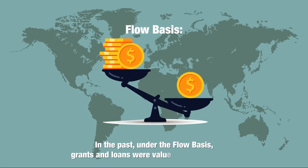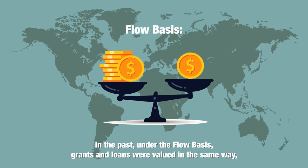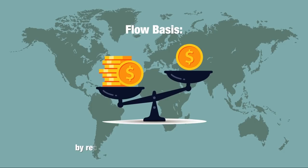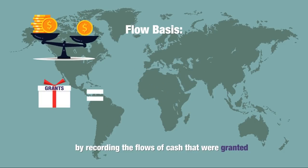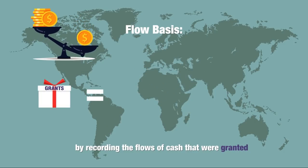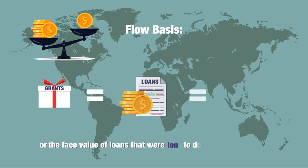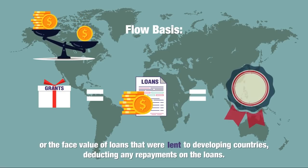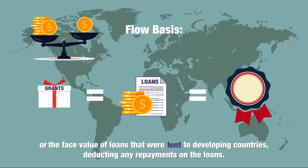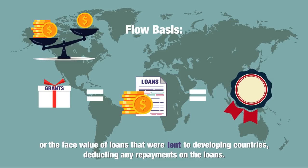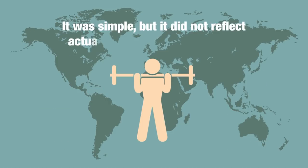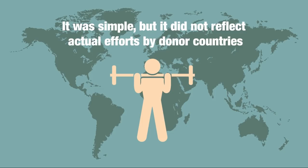In the past, under the flow basis, grants and loans were valued in the same way by recording the flows of cash that were granted, or the face value of loans that were lent to developing countries, deducting any repayments on the loans. It was simple, but it did not reflect actual efforts by donor countries.